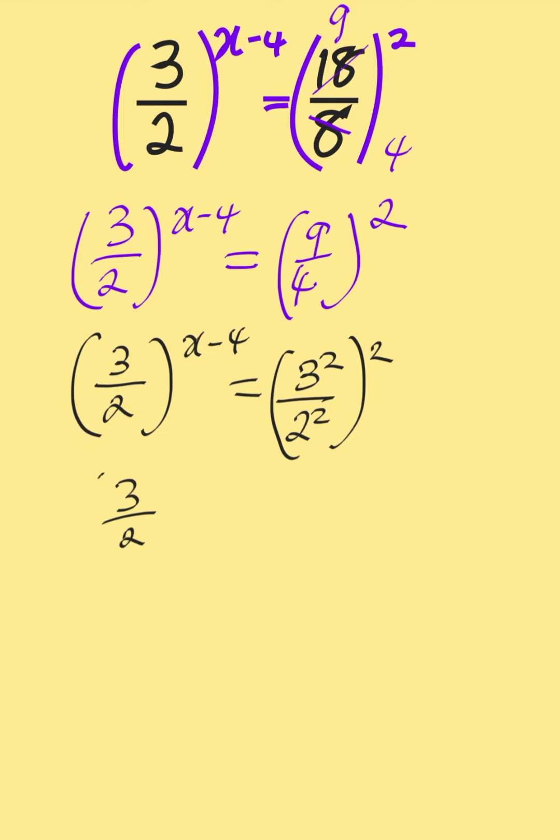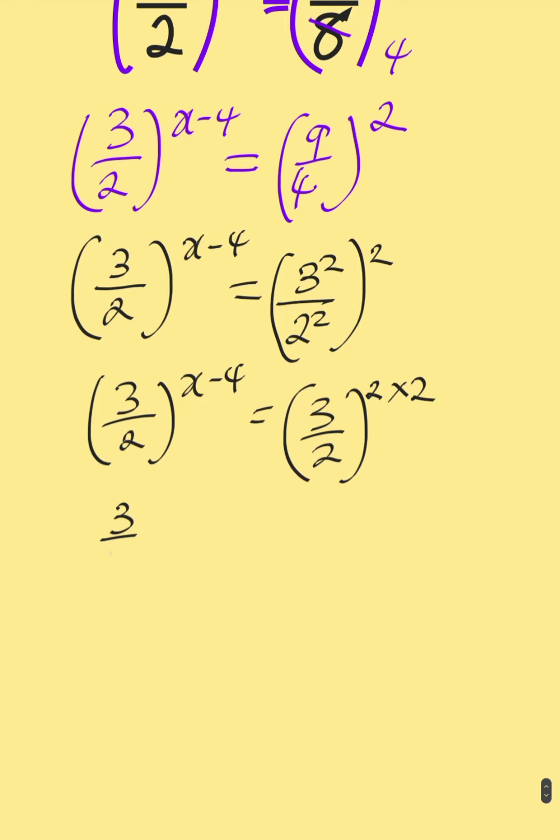Notice the power of 2 is common on the right side. You can factor it out and multiply the exponents. So 3 over 2 to the power of x minus 4 equals 3 over 2 to the power of 4, because 2 times 2 is 4.